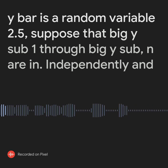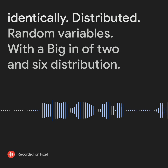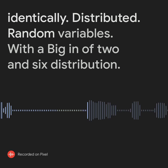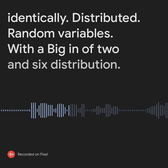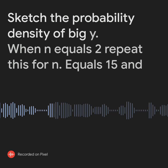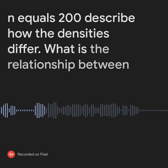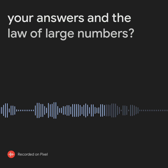2.5. Suppose that Y sub 1 through Y sub n are independently and identically distributed random variables with a N(2, 6) distribution. Sketch the probability density of Y when n equals 2. Repeat this for n equals 15 and n equals 200. Describe how the densities differ. What is the relationship between your answers and the Law of Large Numbers?